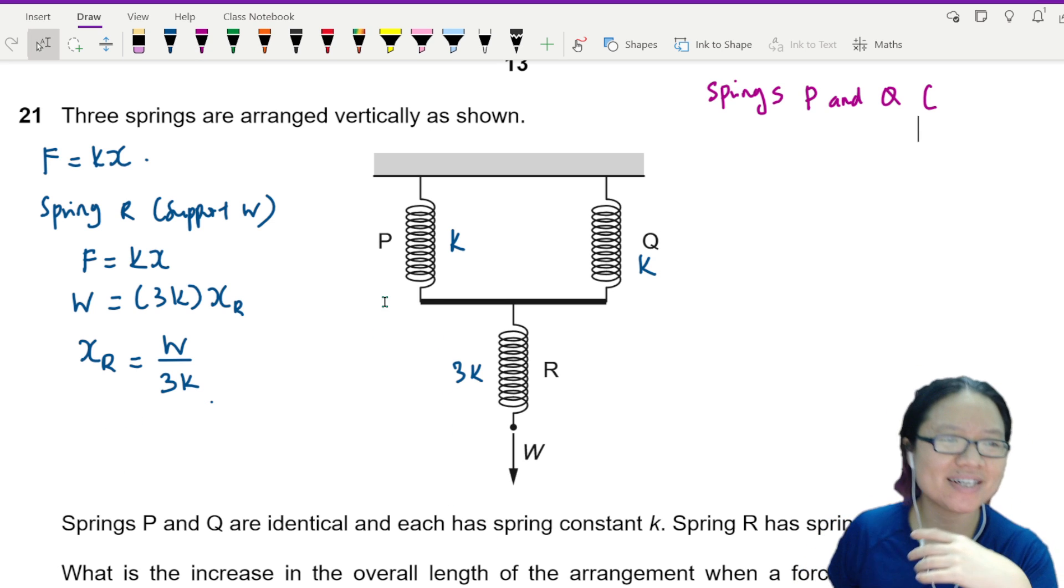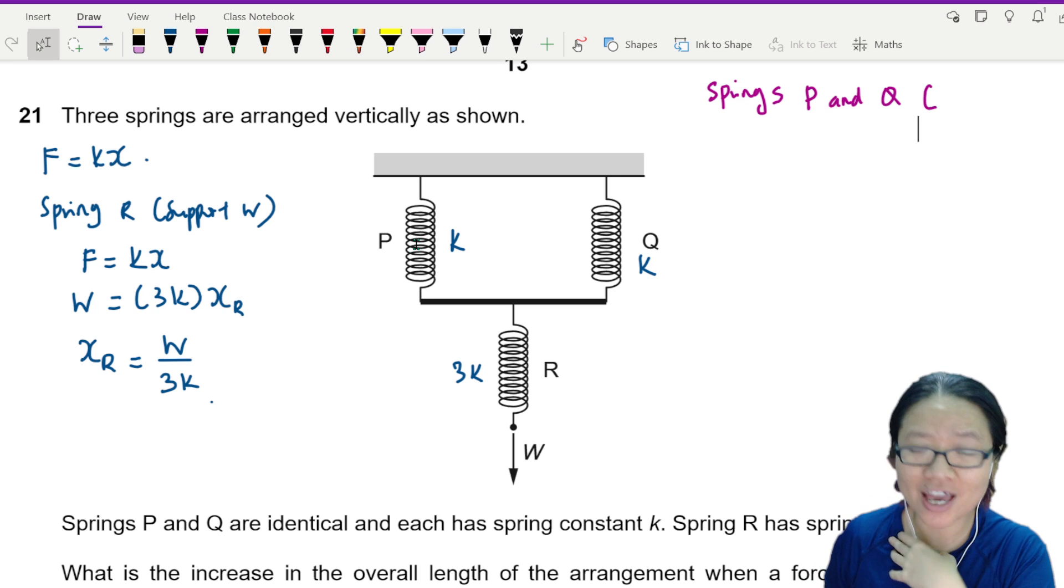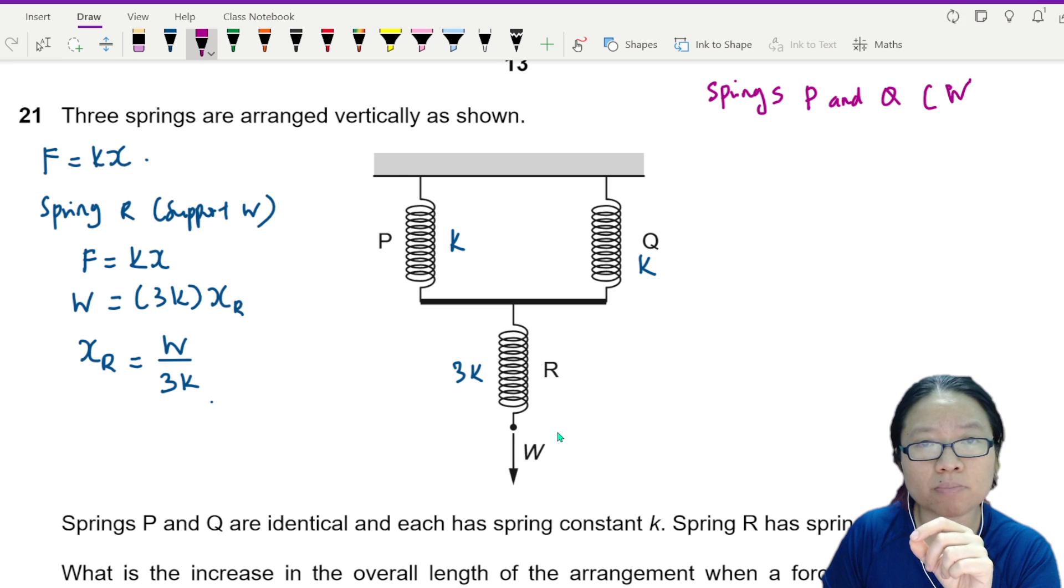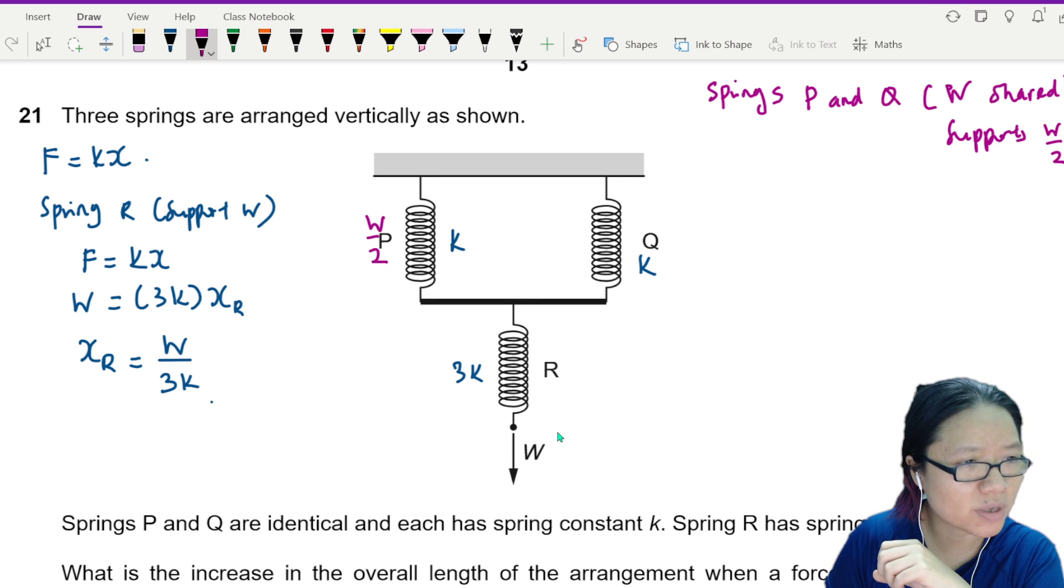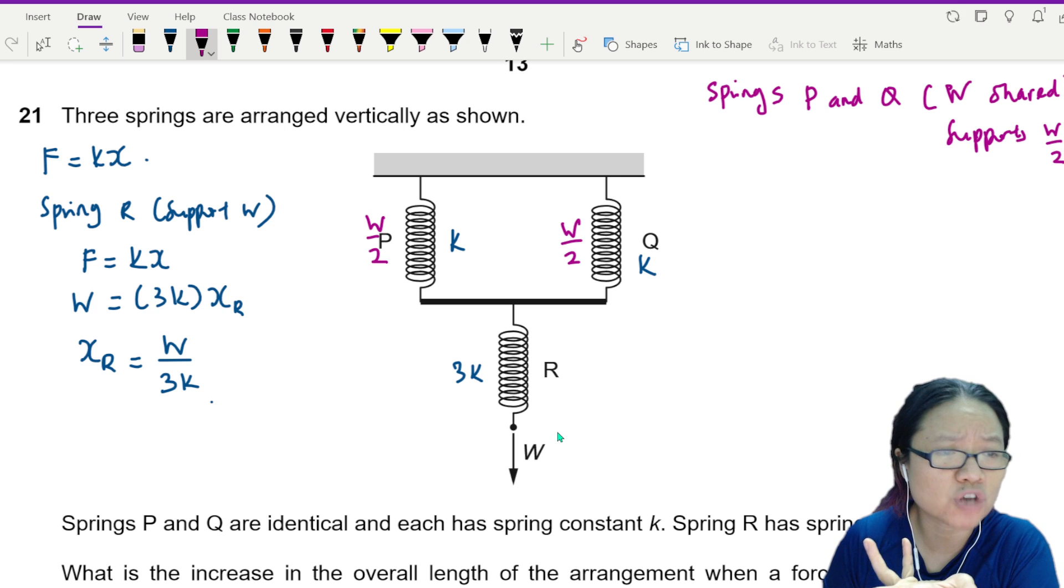So it's a bit like you can either teach on your own or you can get a friend like Miss Lee and Miss Annie. Two of them, they share the W. We share the load. So W is shared equally because it's the same spring. So support W over 2. So you carry W over 2. You carry W over 2. Teacher, what about R? R got no one to share. So R will carry W. GG.